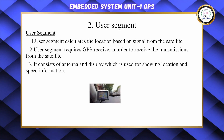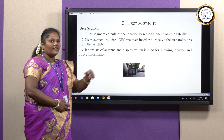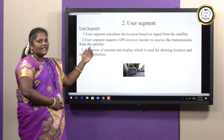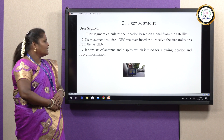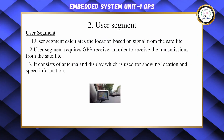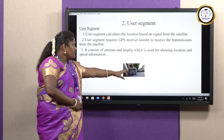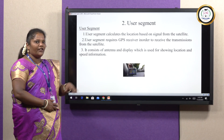The user segment calculates location based on signals received from satellites. It requires a GPS receiver in order to receive transmissions from the satellite. It consists of an antenna and a display, which is used for showing location and speed information.